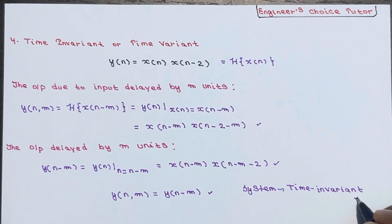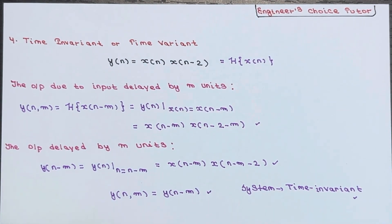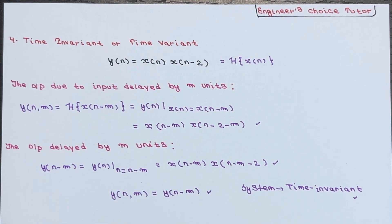In summary, the system is dynamic, nonlinear, causal, and time invariant. In an exam, you simply write: system is dynamic, nonlinear, causal, and time invariant. If you have any doubts, you can ask in the comment section. Thanks for watching.